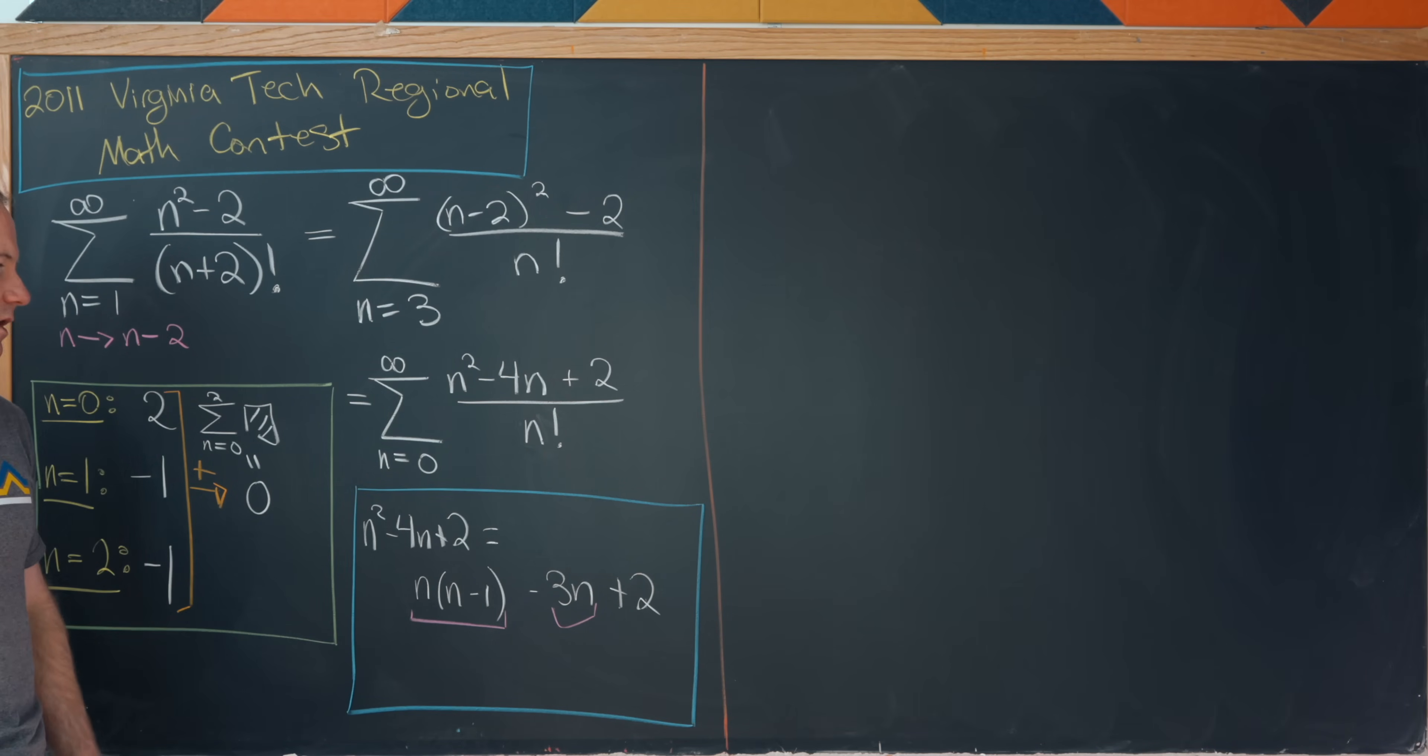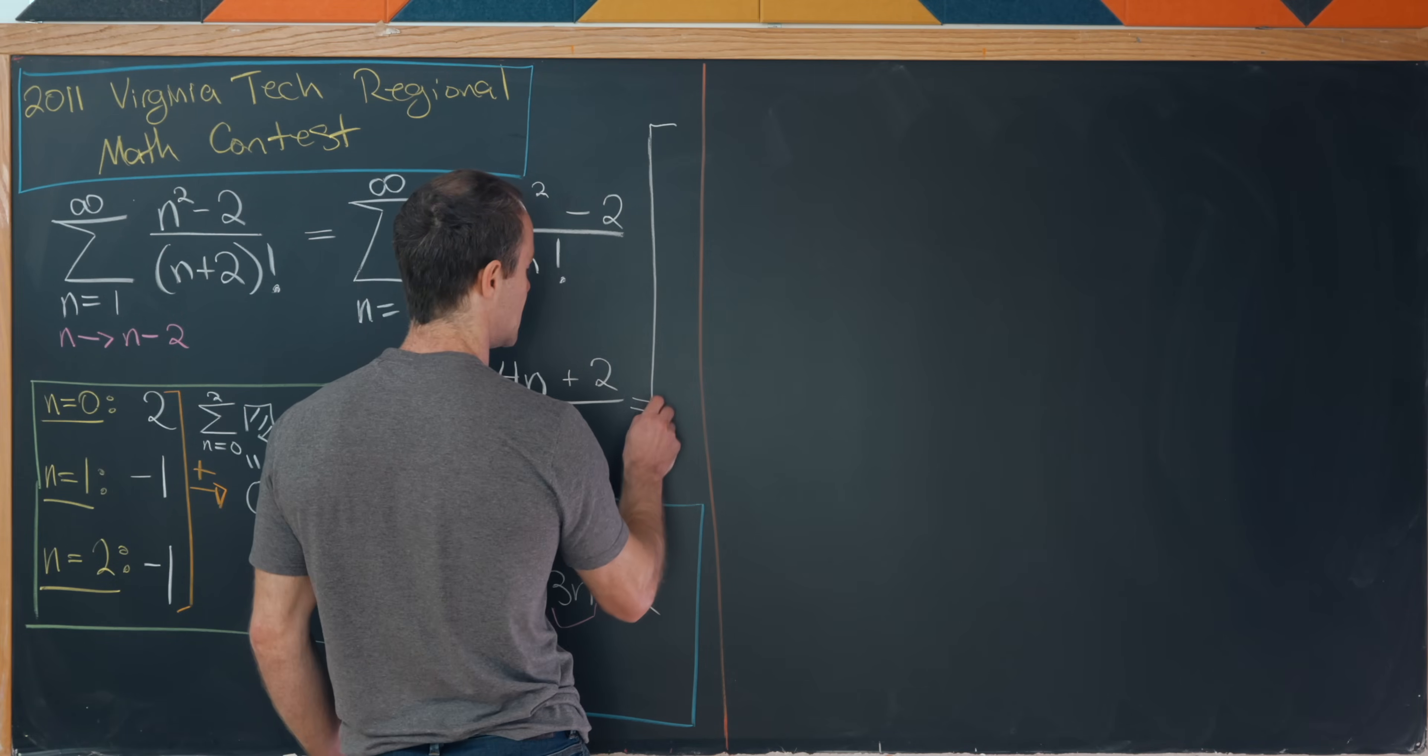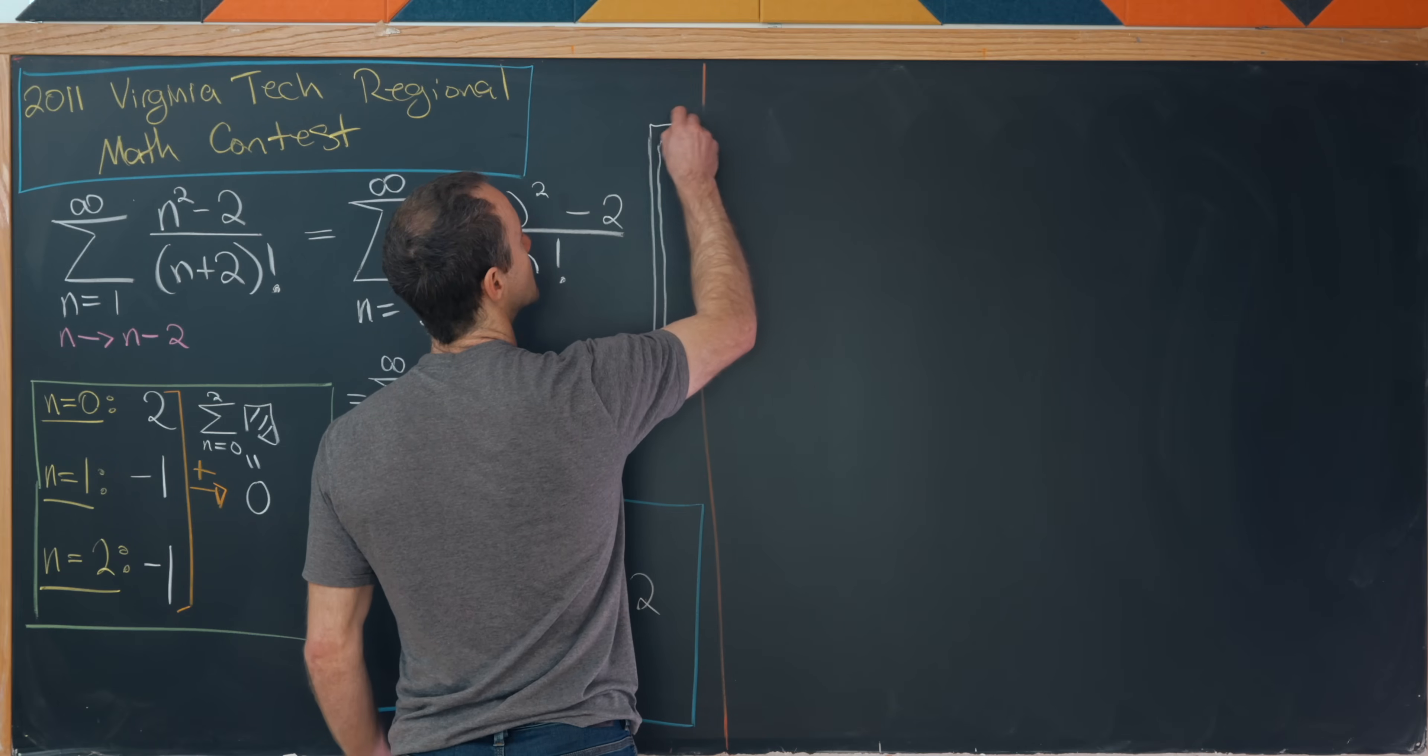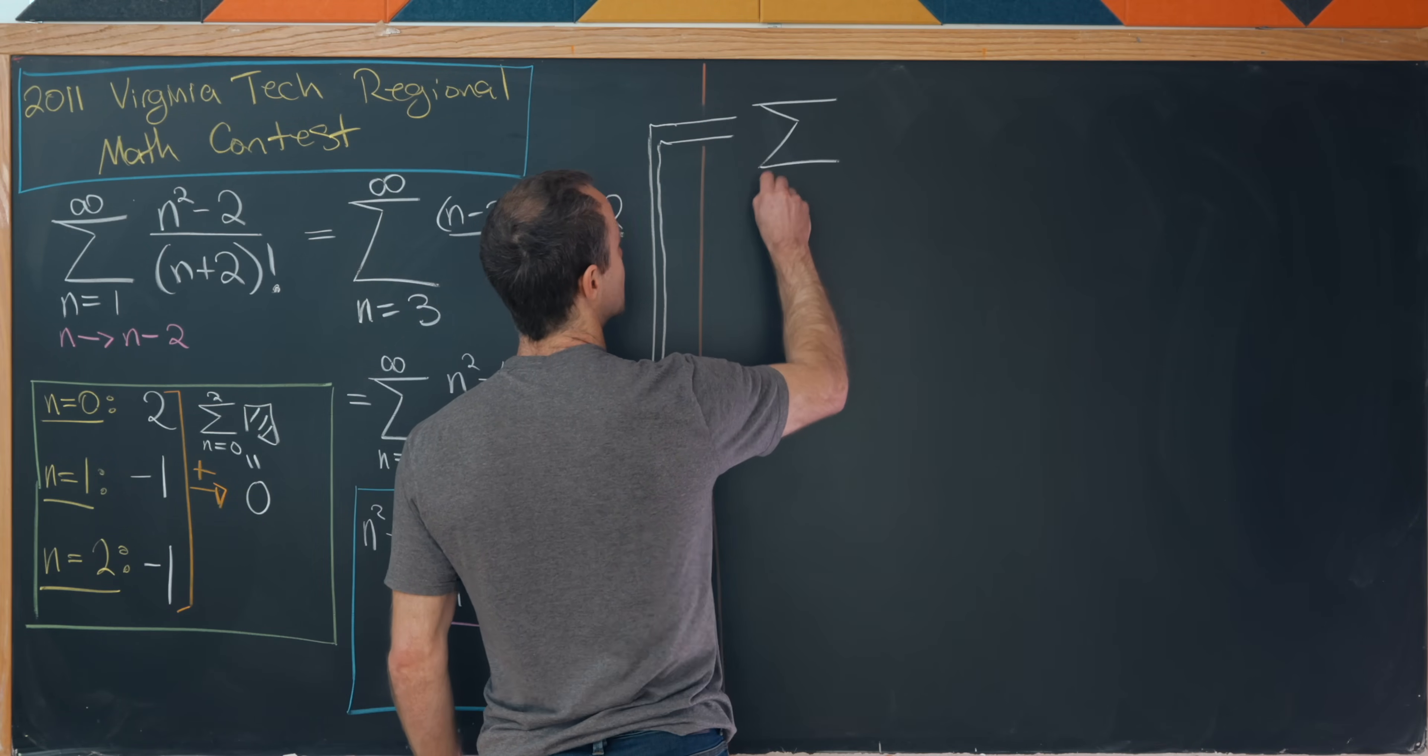And just kind of looking ahead, that's because something like this looks like a power series where the second derivative has been taken, whereas something like this looks like a power series where the first derivative has been taken. But we'll see that more in just a second.